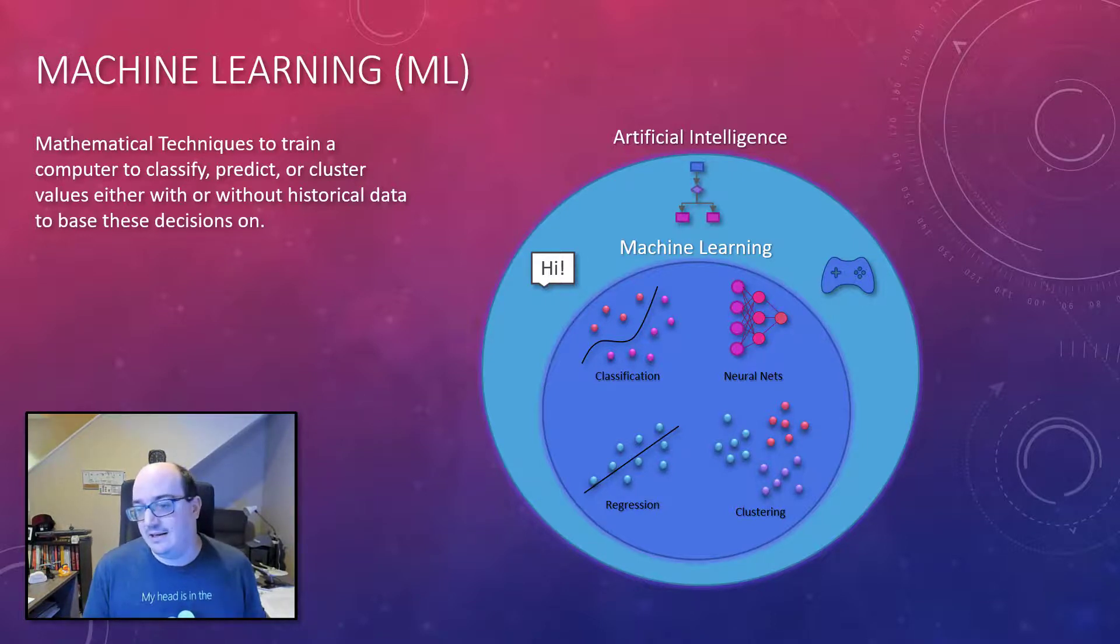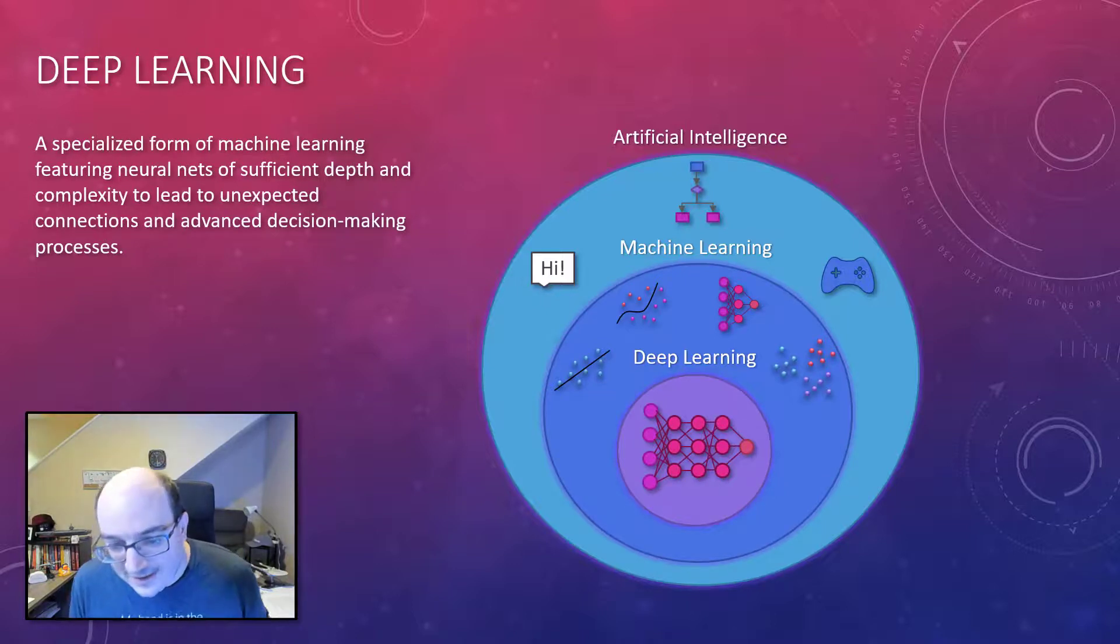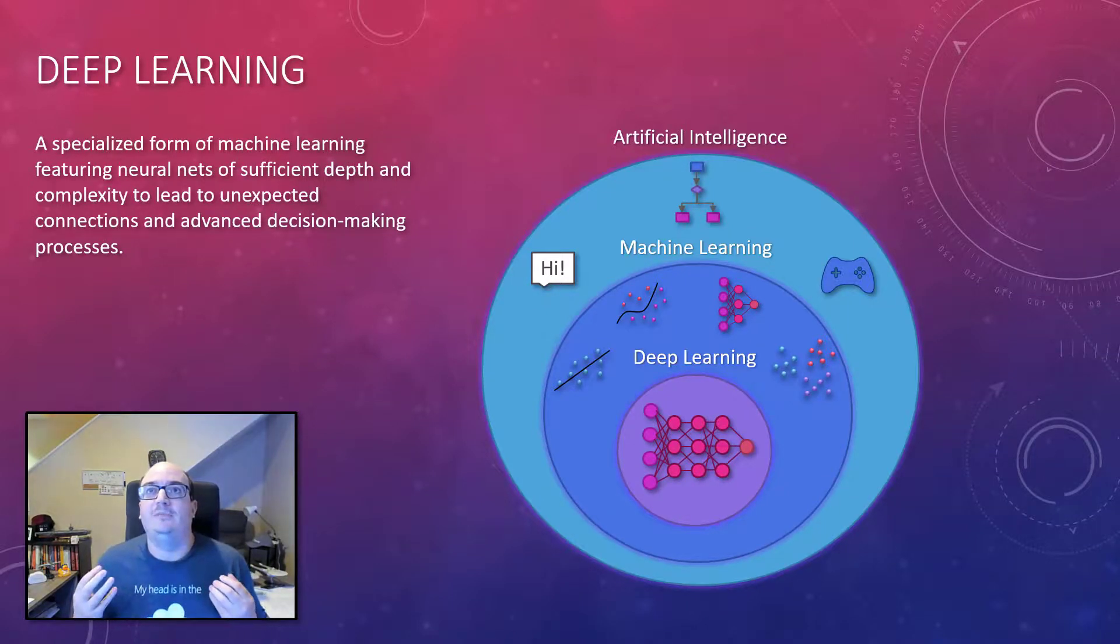Now getting even deeper, we have the idea of deep learning. Sorry, no pun intended there. Deep learning is a form of machine learning where we are using neural networks of a sufficient depth and complexity. So we have additional layers to our neural networks, which lets them form more and more connections, which makes them form more inferences in our data. Now training does take a little bit longer with deep learning, but they can often find relationships you had no idea were even there. And so deep learning is being applied to a lot of more advanced things involving computer vision, object identification, things like that. A lot of the really exciting things inside of the machine learning field are coming through deep learning.